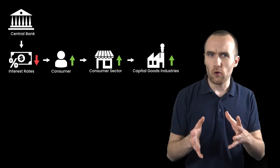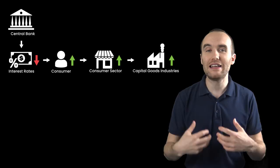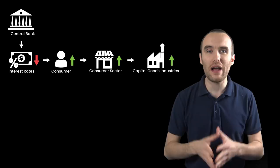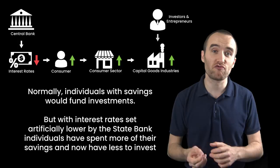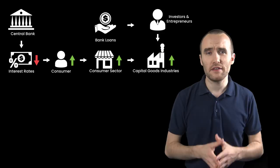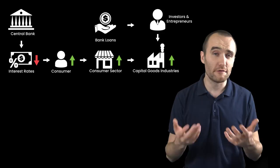But in order to boost production, the capital goods industries need more capital or currency to expand their factories and so on. And where does this capital come from to increase production? Well, normally it would come from savings and investments, but the interest rate has been lowered, so there's less of that going around. So entrepreneurs and investors go to the banks for money. This is where the government central bank comes in — in order to boost the economy even further, the central bank prints currency into existence.